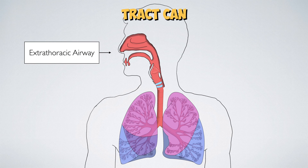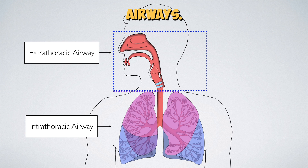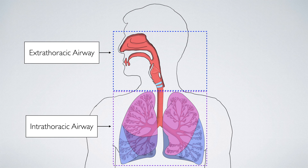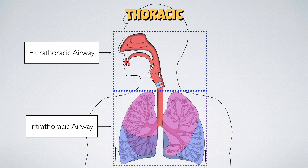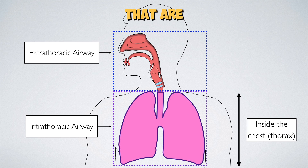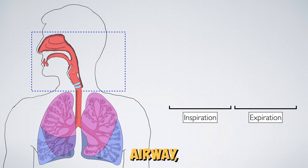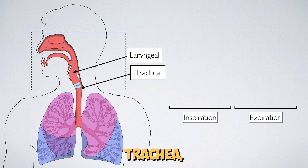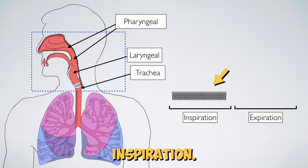The respiratory tract can be divided into the extrathoracic and intrathoracic airways. The extrathoracic airways include parts of the respiratory tract that are not in the thorax, whereas the intrathoracic airway includes those parts that are in the thorax. Obstruction in the extrathoracic airway, such as the proximal trachea, the laryngeal or the pharyngeal parts of the upper respiratory tract, produces a stridor during inspiration.